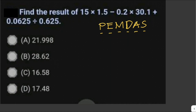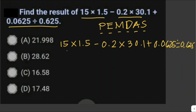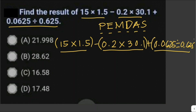So we have to perform the multiplication and division operations first, from left to right. You can group them in parentheses like this so you won't be confused. So that is 15 times 1.5, which is just equal to 22.5, minus 0.2 times 30.1.